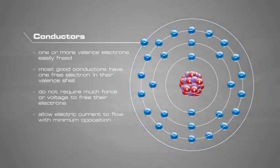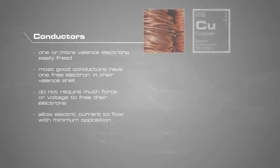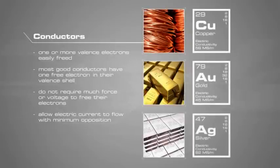The purpose of using conductors is to allow electric current to flow with minimum opposition or resistance. Copper has high conductivity. Gold and silver are also conductive, but they are more expensive and thus not practical in most applications.